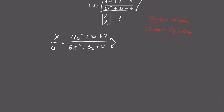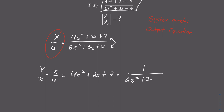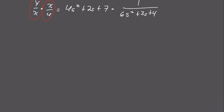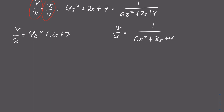To do this, we rewrite the left side as y over x times x over u equals 4s² + 2s + 7 times 1 over 6s² + 3s + 4. We've now split y over u into our output equation on the left and our system model on the right. We can further split this as y over x equals 4s² + 2s + 7 and x over u equals 1 over 6s² + 3s + 4.